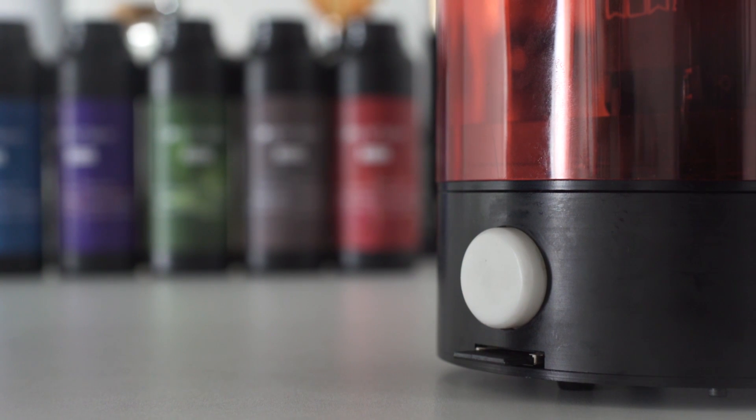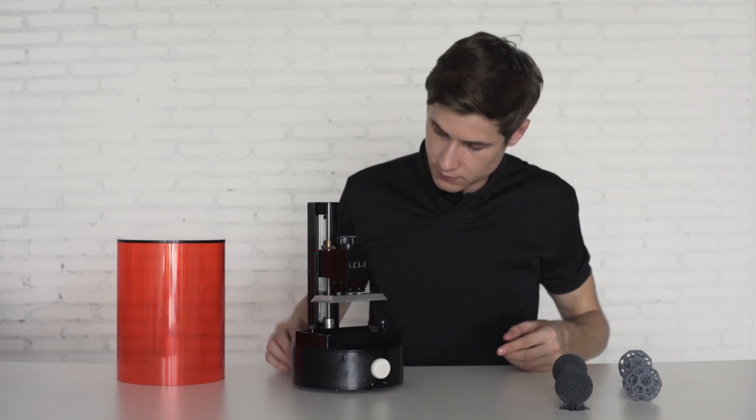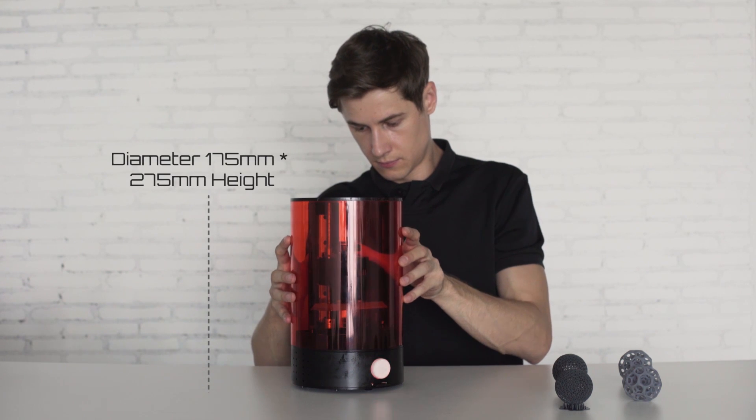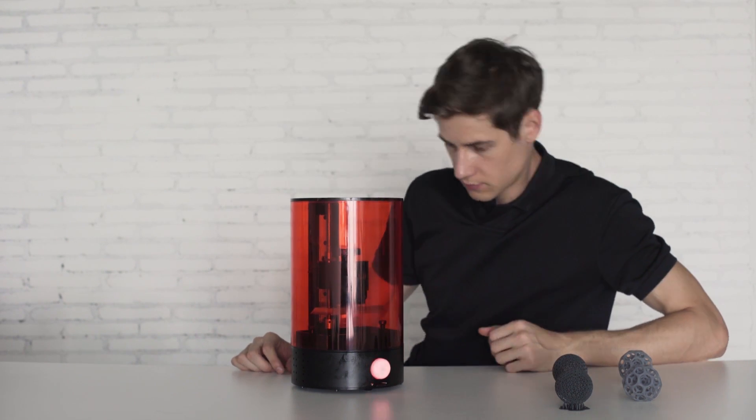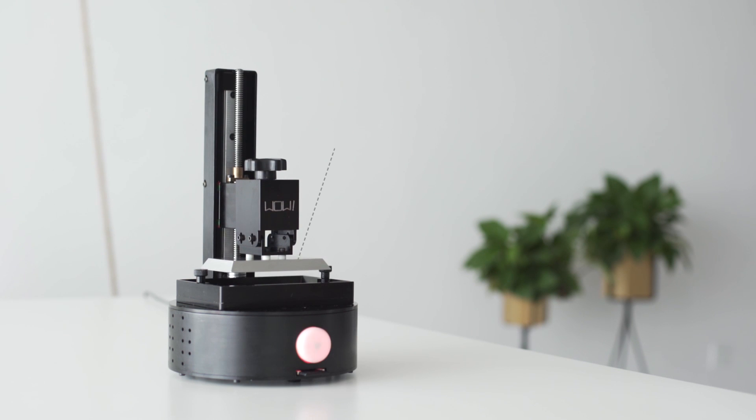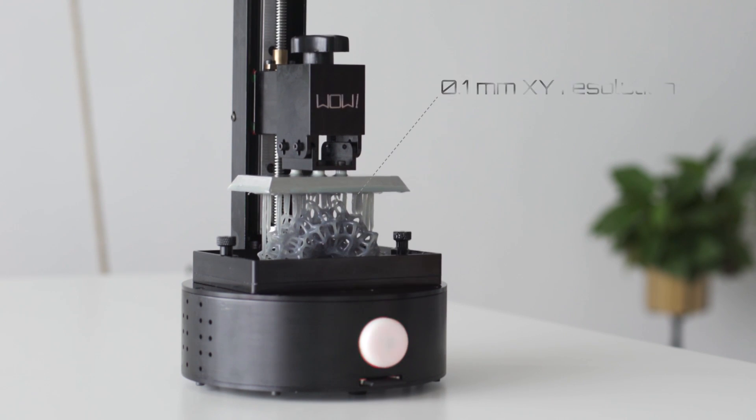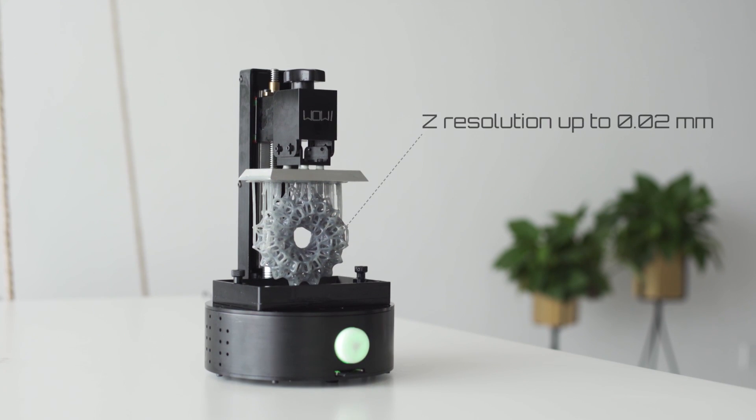During the printing, an LED light will keep you updated about the status and a UV protective translucent cover avoids any damage from the surroundings. The printing area is 102 by 125 millimeters with a 0.1 millimeter XY resolution and a Z resolution up to 0.02 millimeters.